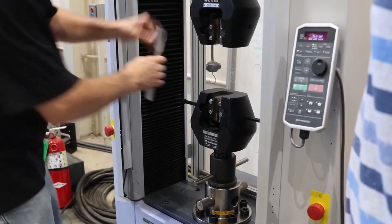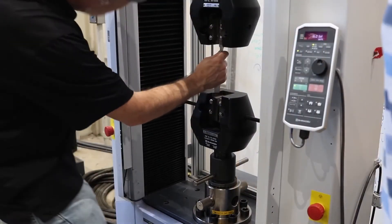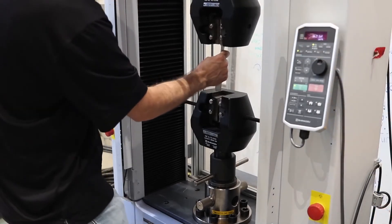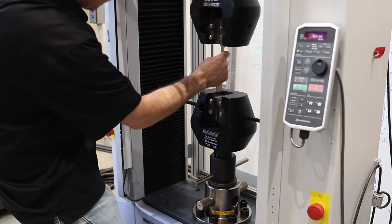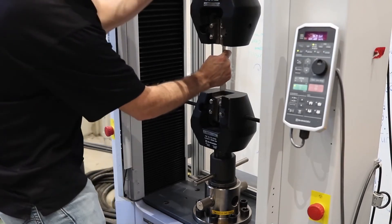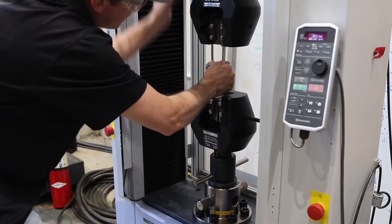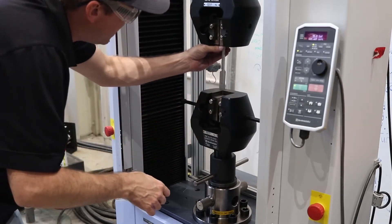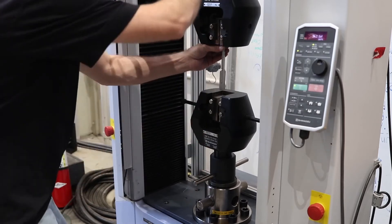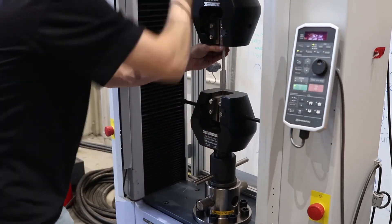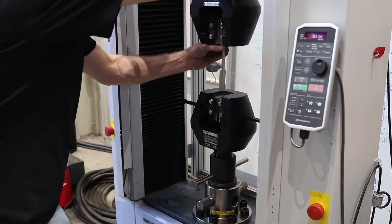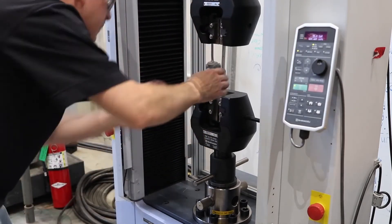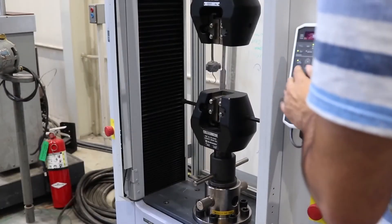Now we install the dog bone in the jaws. We place the specimen in the upper jaws first, aligning it correctly so it is perpendicular to the face of the jaw. The top of the sample should roughly align with the scribe in the jaw face. After aligned, we tighten the upper jaw. This process is much more easily completed with two students.